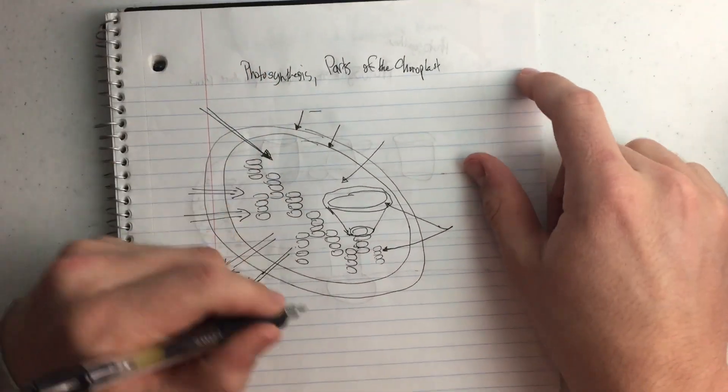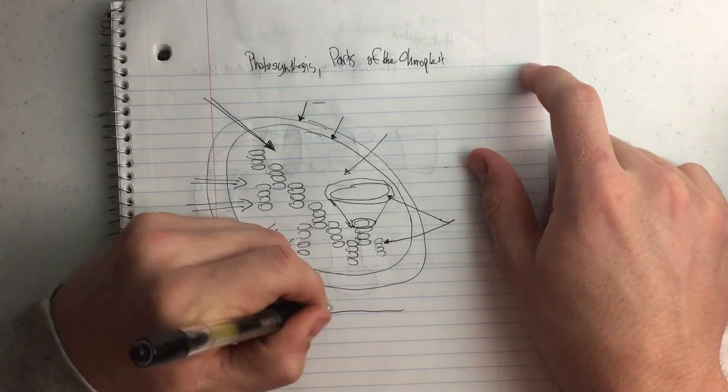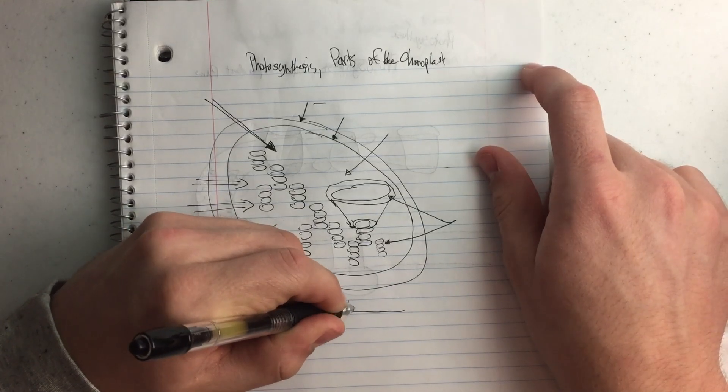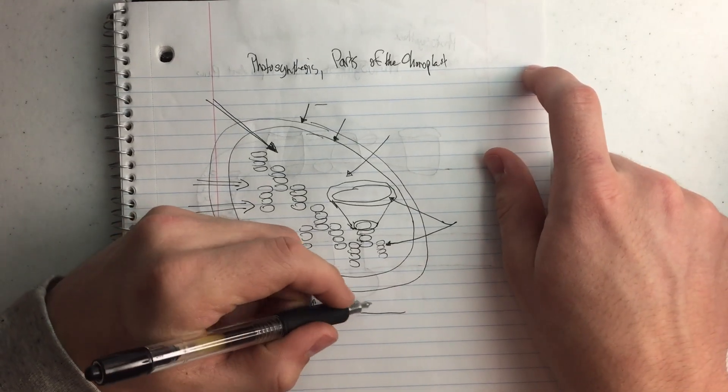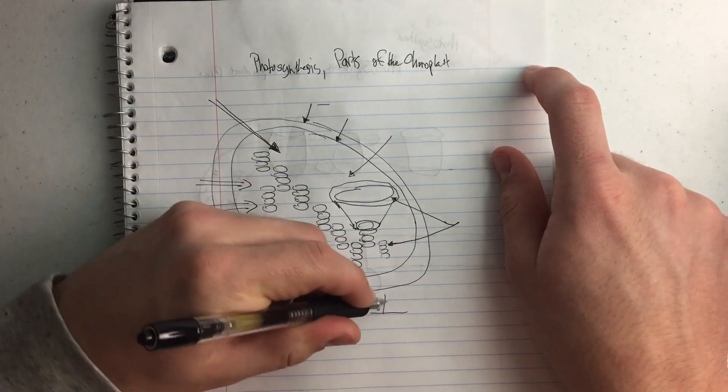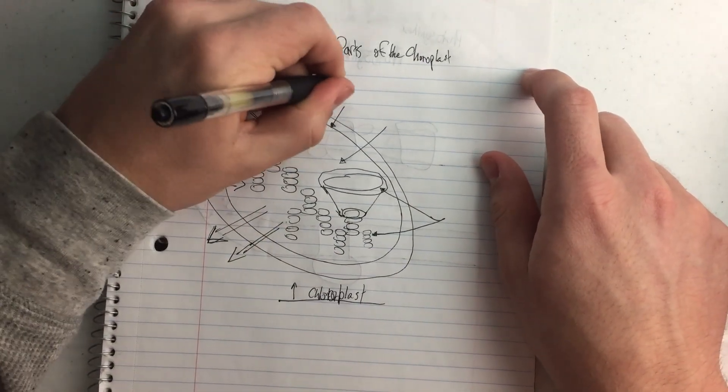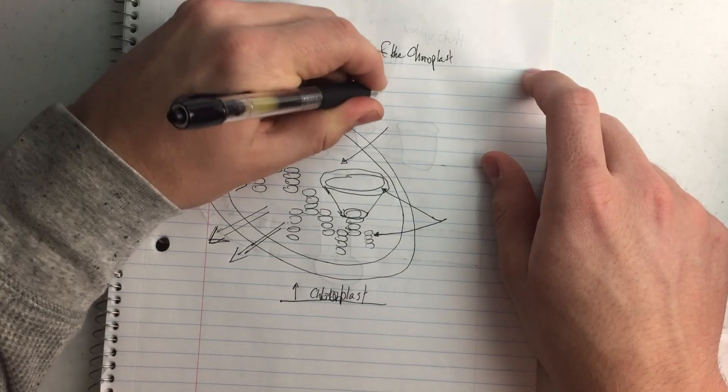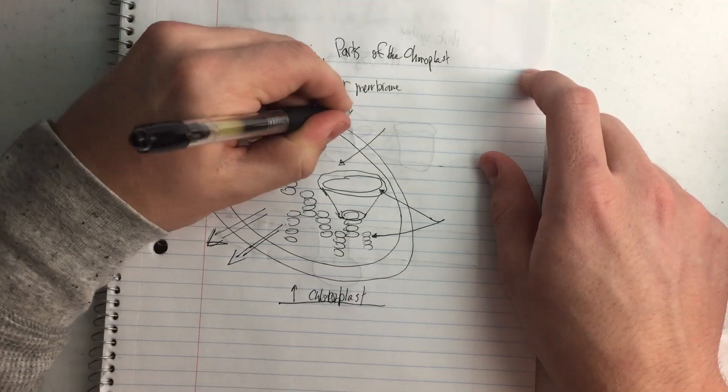So starting from the outside, this entire thing right here would be a chloroplast. We're going to have an outer membrane and then an inner membrane.